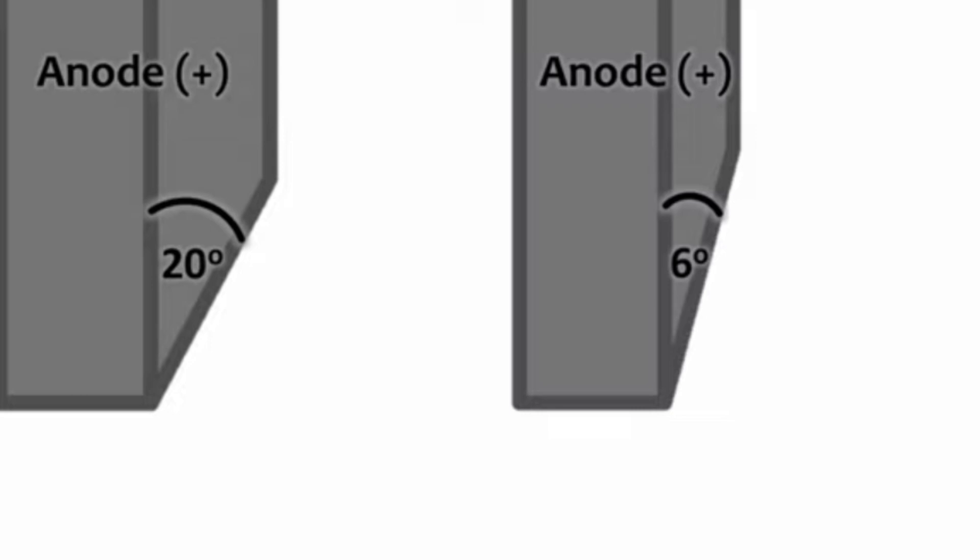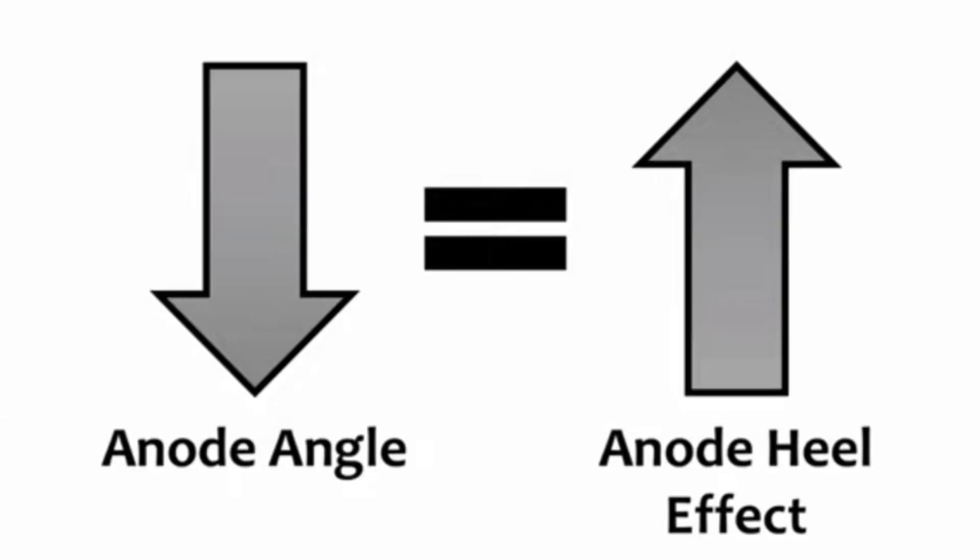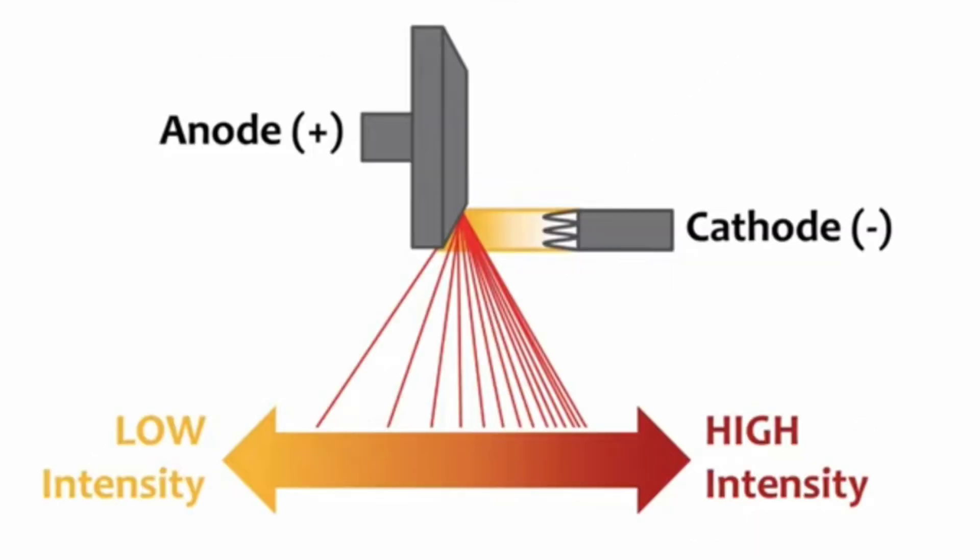X-ray tube angle jitna kum hoti hai, Anode Heel Effect utna hi zyada hota hai. Toh aap dekhein: agar hum anode angle ko increase kartay hain toh Heel Effect decrease hoga; agar anode angle ko hum decrease kartay hain toh Anode Heel Effect increase hoga.